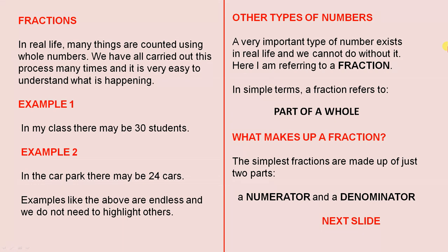Other types of numbers. A very important type of number exists in real life and we cannot do without it. Here I am referring to a fraction. In simple terms, a fraction refers to part of a whole. What makes up a fraction? The simplest fractions are made up of just two parts: a numerator and a denominator.